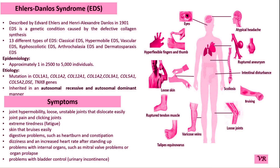Ehlers-Danlos syndrome is a group of inherited disorders that primarily affects the connective tissue, which provides structure and support to the body including blood vessels and other forms. The condition is characterized by a variety of symptoms, most commonly hypermobile joints, skin that can be stretched, and easy bruising.